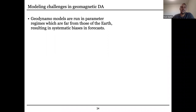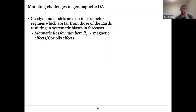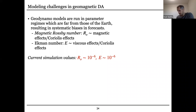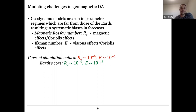Another challenge is that these geodynamo models are run in parameter regimes that really don't match those of the Earth, so you have systematic biases in the forecasts. For example, the magnetic Rossby number and the Ekman number — non-dimensional parameters representing the ratio of magnetic effects to rotation effects, and fluid viscosity relative to rotation effects respectively — are on the order of 10 to the negative six in current simulations. In reality the Ekman number is off by something like nine orders of magnitude.